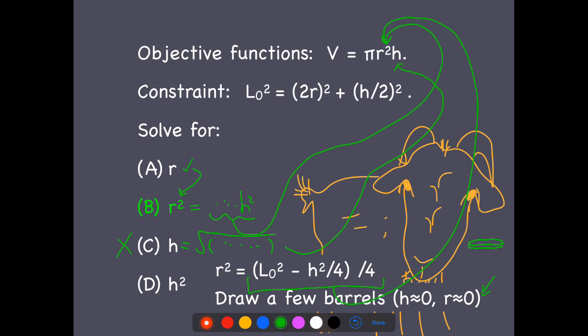And let's just think about what it has to be. L₀ has to go from here to the far edge. And as that gets thinner and thinner, that'll just be the case where L₀ is equal to the diameter of the barrel.